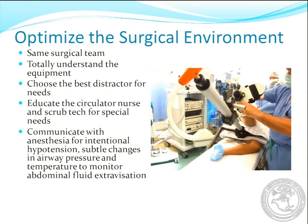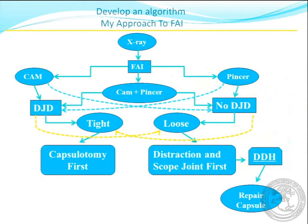Your people need to understand the equipment. The circulator nurse, your tech, needs to understand your pump — understand when you're getting into trouble because it's whizzing away and you don't notice it. You need to communicate with the anesthesiologist. We use intentional hypotension so we can run pump pressures as low as possible. I like to use algorithms — this is kind of my algorithm for doing a capsulotomy or not. In your own cases, try and develop some sort of algorithm so each case is not a surprise.